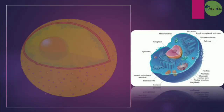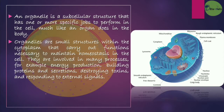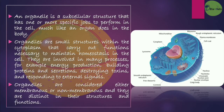In the structure of a cell there are organelles. An organelle is a subcellular structure that has one or more specific jobs to perform in the cell, much like an organ does in the body. Organelles are small, chamber-like structures within the cytoplasm that carry out functions necessary to maintain homeostasis in the cell. They are involved in many processes — for example, energy production, building proteins, secretion, destroying toxins, and responding to external signals. Organelles are considered either membranous or non-membranous, and they are distinct in their structures and functions.